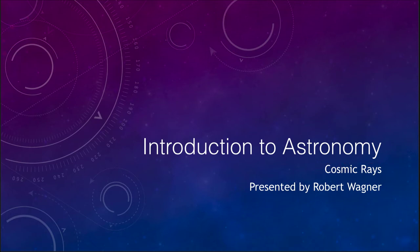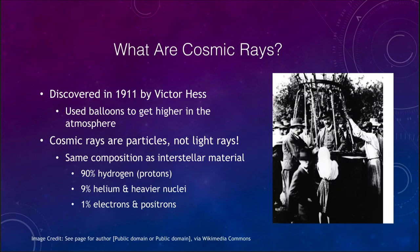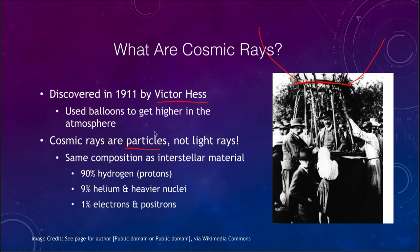Cosmic rays have been known for over a hundred years, studied since 1911 when they were discovered by Victor Hess, who was using balloons to get higher in the atmosphere. You can see the gondola here in the balloon structure. Cosmic rays cannot be detected from the surface of the earth because they are blocked by the earth's atmosphere, which protects us from being bombarded by these high energy particles.